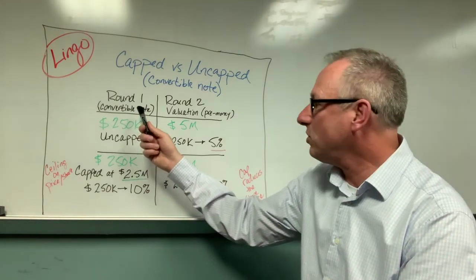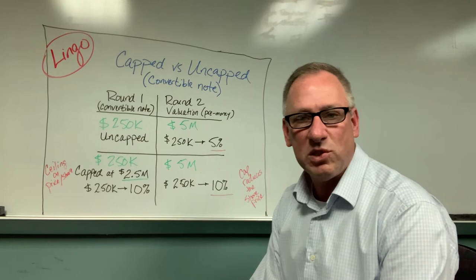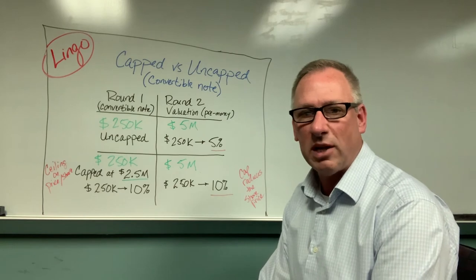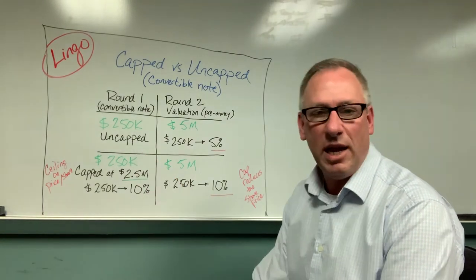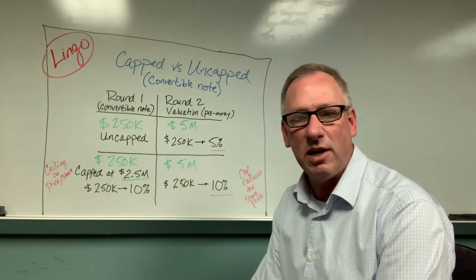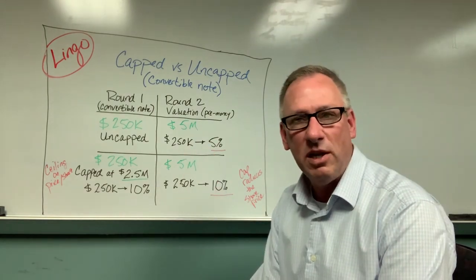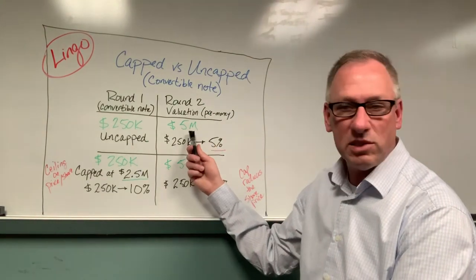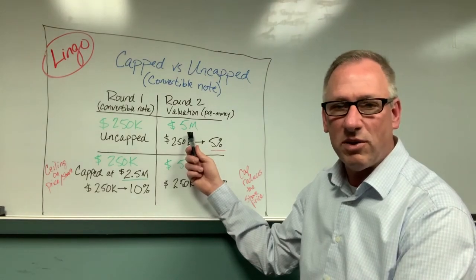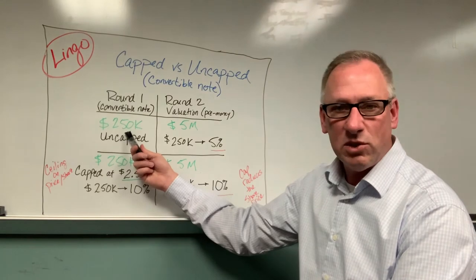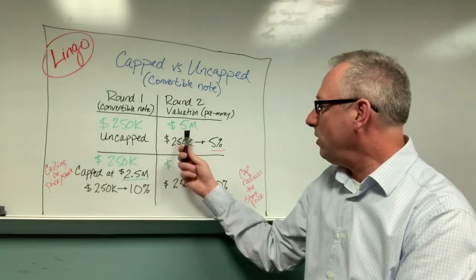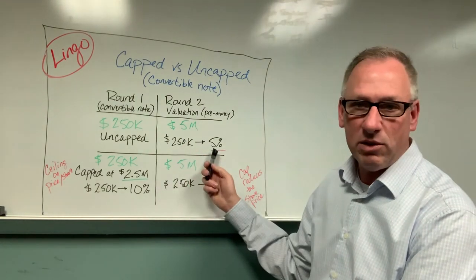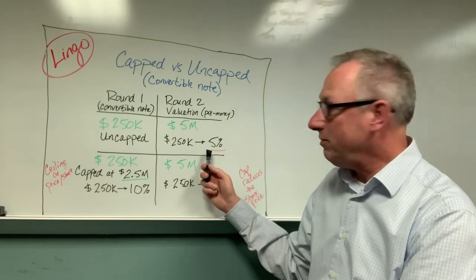Round one is the early stage investor, and in this scenario that investor is putting in $250,000 in the convertible note but without any other stipulations for compensating for risk. Maybe 18 months go by, the company's done well enough that they've attracted another investor, there's now enough track record to do a formal valuation, and in that round they've decided the company is worth five million dollars. Going back to the initial investor, their $250,000 is equal to five percent of that five million dollars, which means that $250,000 can buy that early stage investor up to five percent of the company.